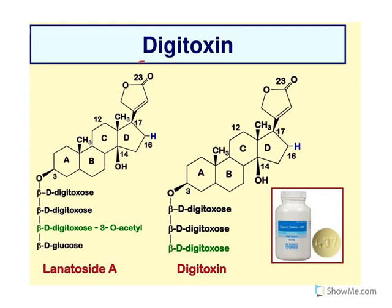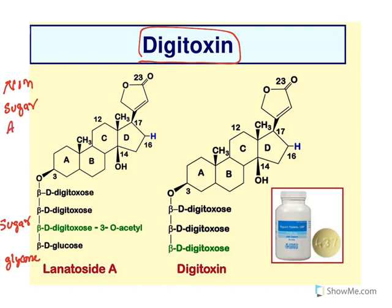Now let us understand about digitoxin. Glycosides are made up of a sugar moiety and a non-sugar moiety. Sugar moieties are known as glycons and non-sugar moieties are known as aglycons. In the case of cardiac glycosides, the aglycon molecule is a steroid molecule. These are known as cardenolides — specifically, phi-beta cardenolides.